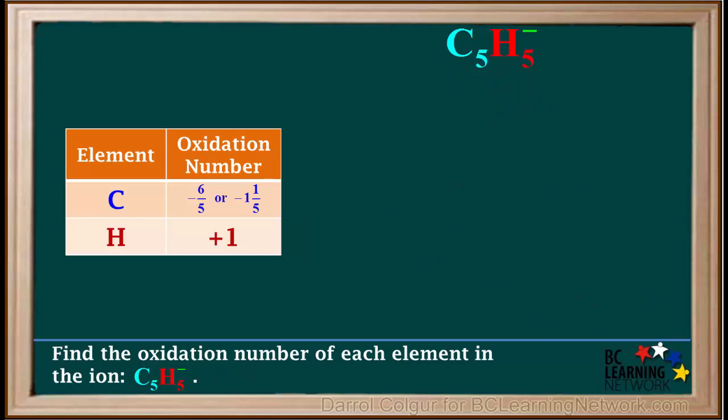So we can summarize by saying that the oxidation number of carbon in this ion is negative six-fifths, or negative one and one-fifth. And the oxidation number of hydrogen is positive one.